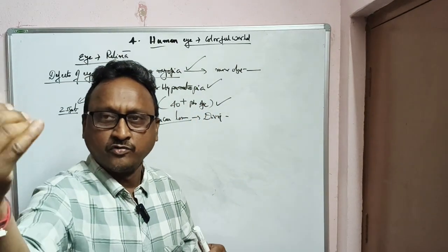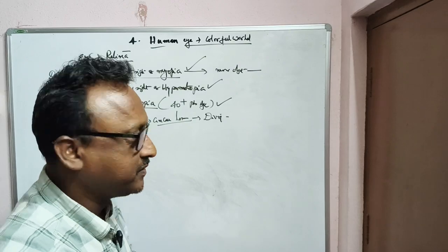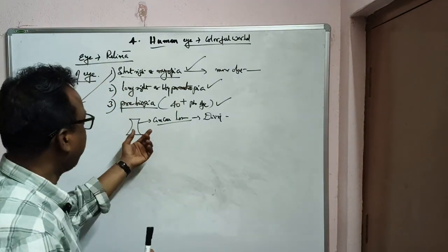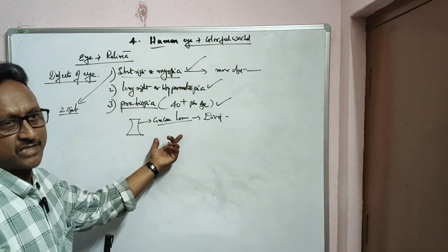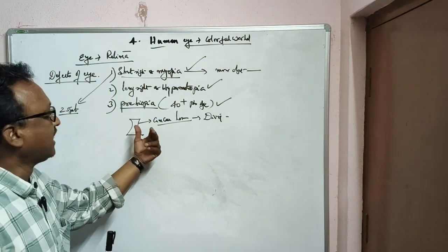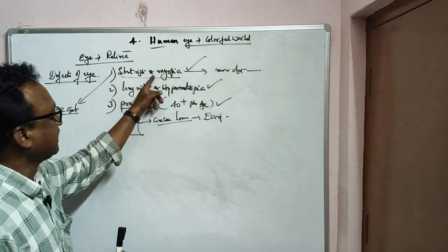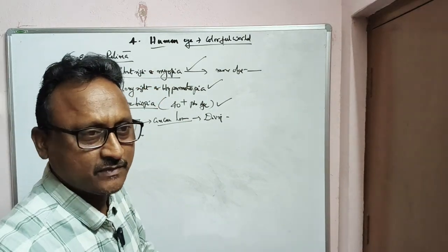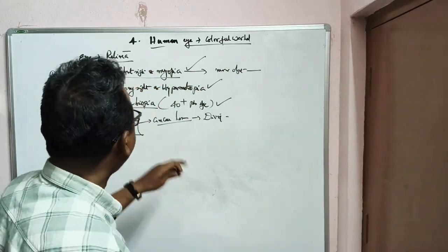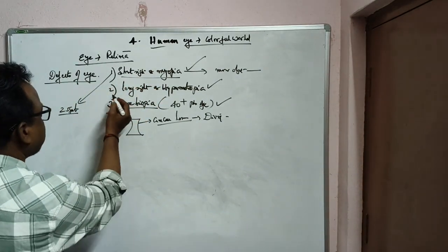To see farther objects, a concave lens is used in the glasses, and therefore the defect is corrected. Now coming to long sight.